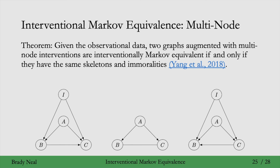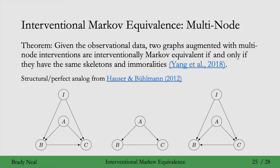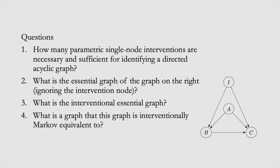This notion of interventional Markov equivalence extended to the multi-node intervention setting comes from Yang et al., 2018, and works for general multi-node parametric interventions. There was an analogous result for specifically structural or perfect multi-node interventions from Hauser and Buhlman, 2012. That concludes this section on interventional Markov equivalence. Go ahead and pause to read through the review questions — the first question isn't about the graph, but questions 2 through 4 are about the graph on this slide.